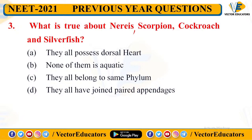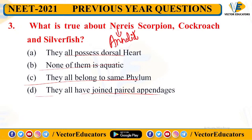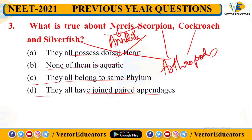Next question: what is true about Neris, scorpion, cockroach, and silverfish? The question asks what is common among these four. Options are: they all possess a dorsal heart; none of them is aquatic; they all belong to the same phylum; or they all have jointed paired appendages. Neris is similar to an earthworm and belongs to the Annelida phylum.